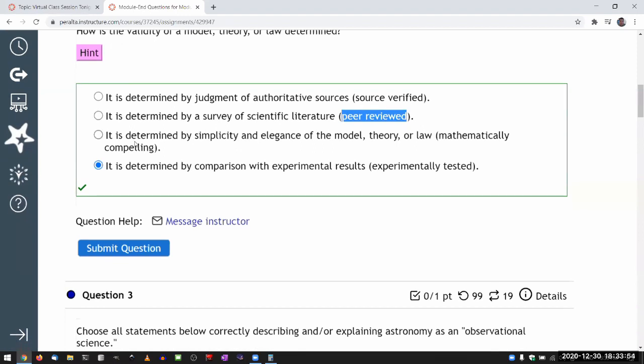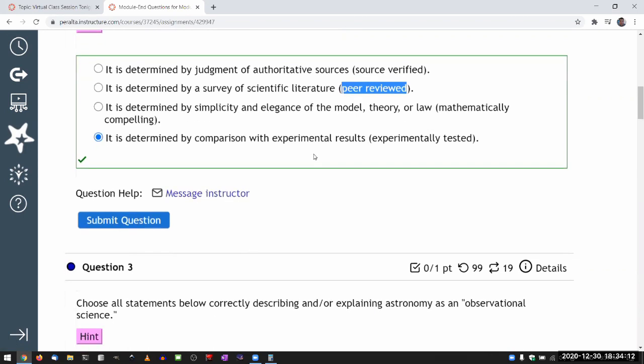And the same thing here. Sometimes when we scientists communicate with each other, sometimes we find elegant theory to be more compelling. But in the end, it's not the elegance that says whether a theory is correct or not. The ultimate arbiter of truth in science is experiment. That's kind of our foundation of it.